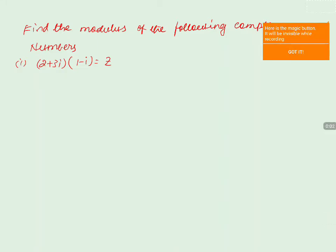The question is to find the modulus of the following complex number. The given problem contains a complex number z equals 2 plus 3i into 1 minus i. We'll take the complex number first: z is equals to 2 plus 3i into 1 minus i.